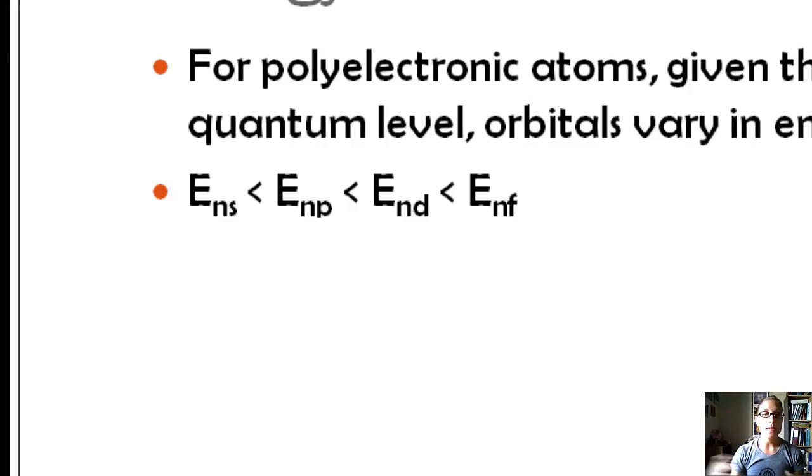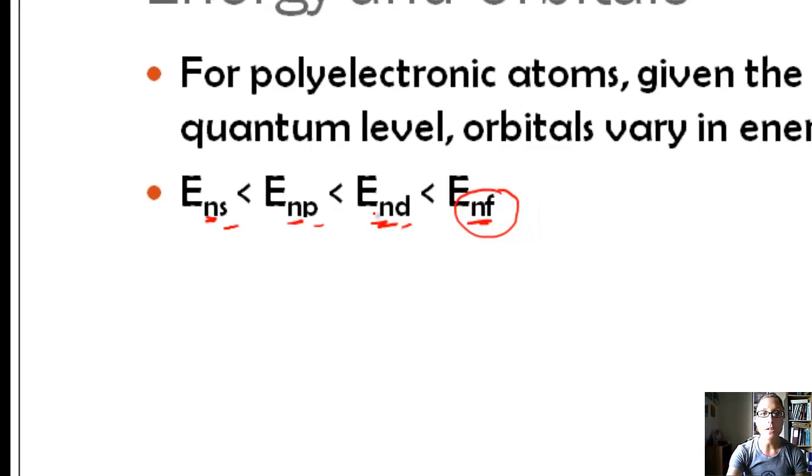We talked about we had those different shapes for the L values. We had S, P, D, and F. If they all have the same principal quantum number, so let's say 4, F would have the highest energy because those are more shielded, they're further away from the nucleus, than the S or the P or the D. Within one principal energy level, we have different amounts of energy.